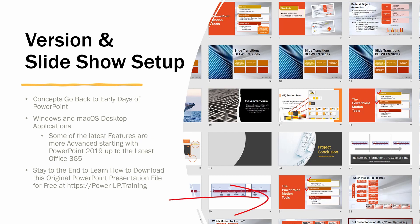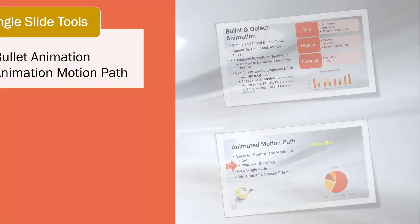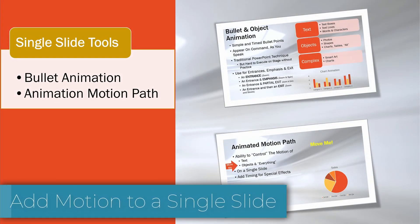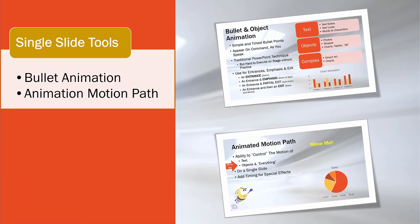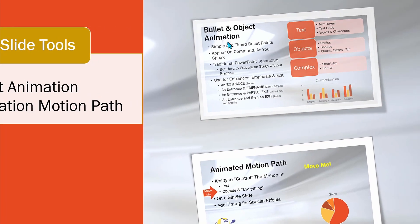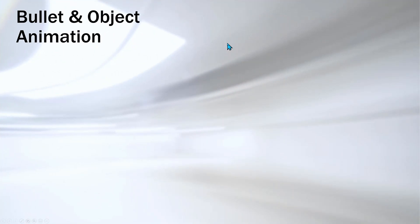The two motion tools centered around bringing life to a single slide are the long-standing object and bullet animation tool and the close cousin called animation motion path. Let's start off with bullet and object animation.